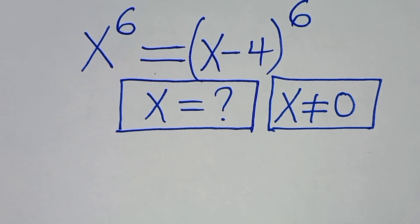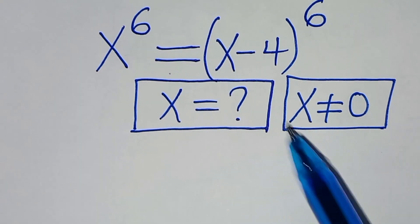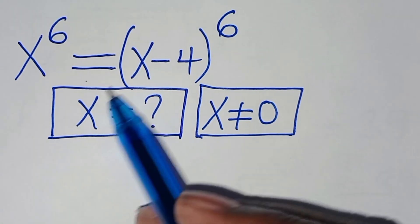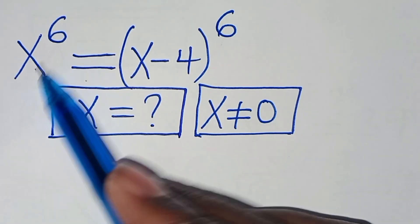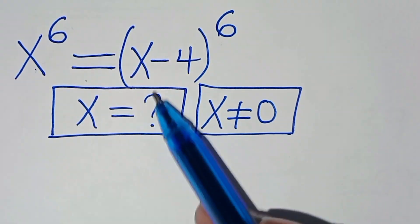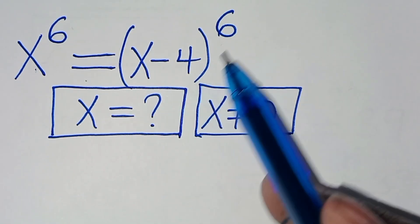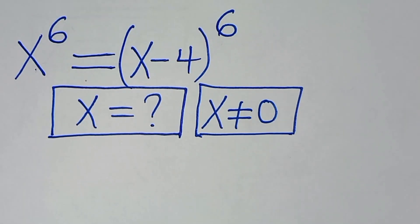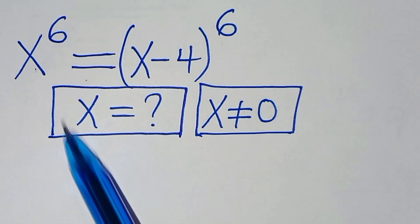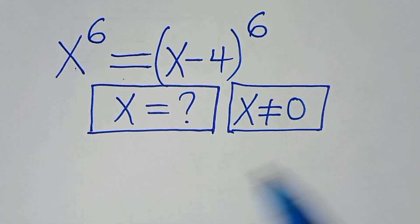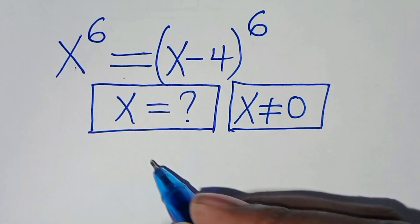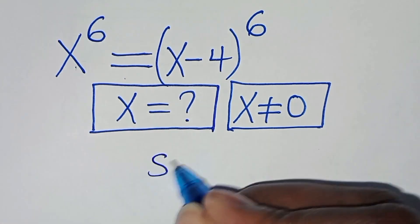Hello everyone, you are welcome to solve this nice algebra problem which is x to the power of 6, this is equal to x minus 4 to the power of 6. What are the values of x, given that x is not equal to 0? So let's present a solution from here.